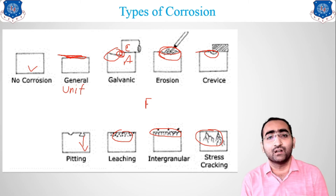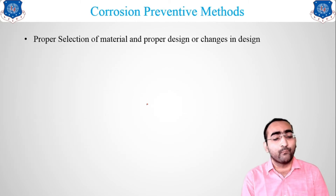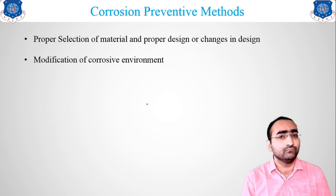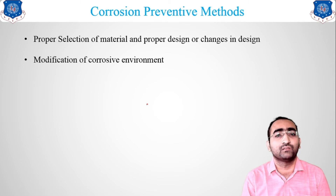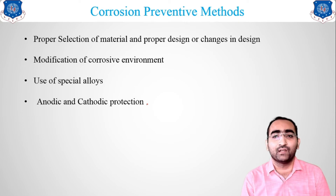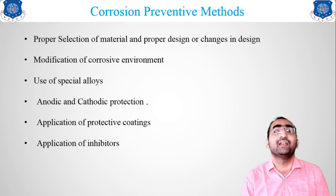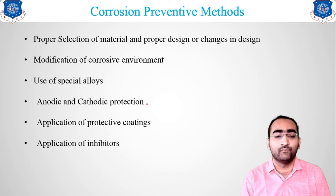Now we move forward to corrosion prevention methods. If corrosion is going to occur, which methods can we use to prevent it? The first is proper selection of material and proper designing. Second is modification of the environment. Third is using special alloys. Fourth is anodic and cathodic protection, which is majorly used for ships. Fifth is the application of protective coatings and inhibitors.